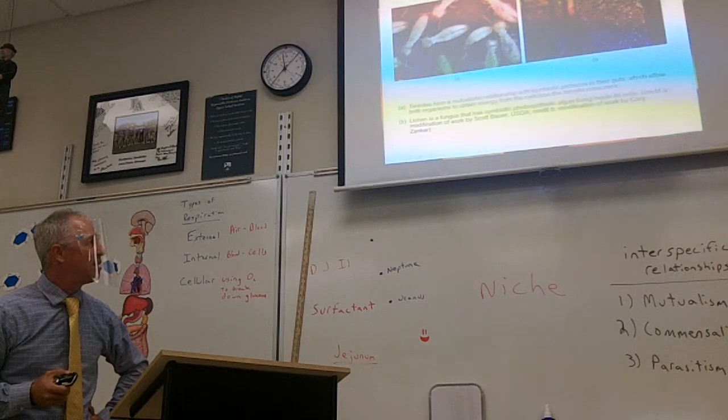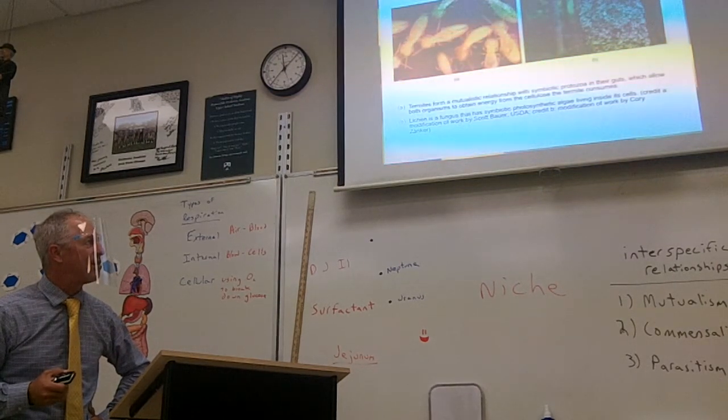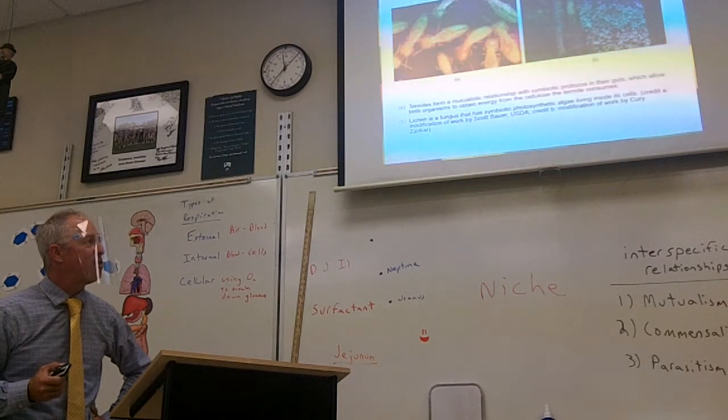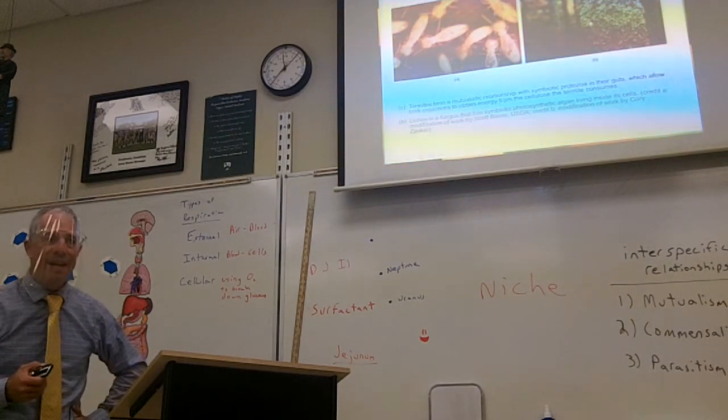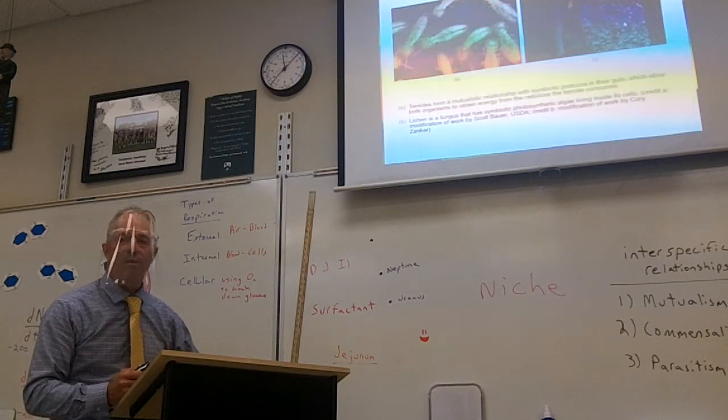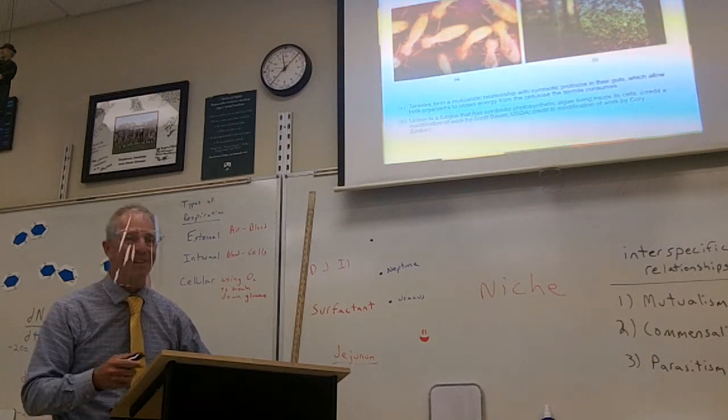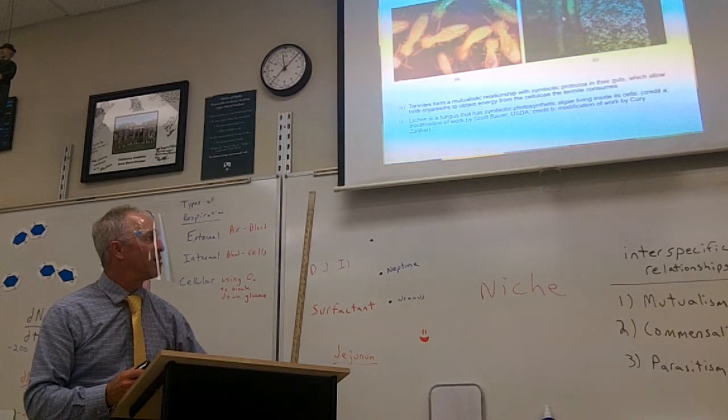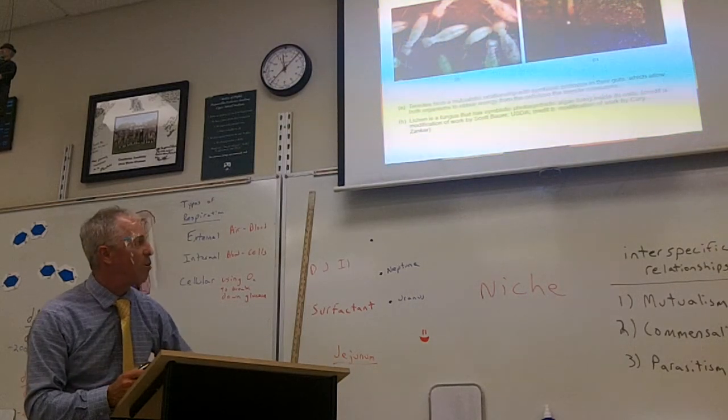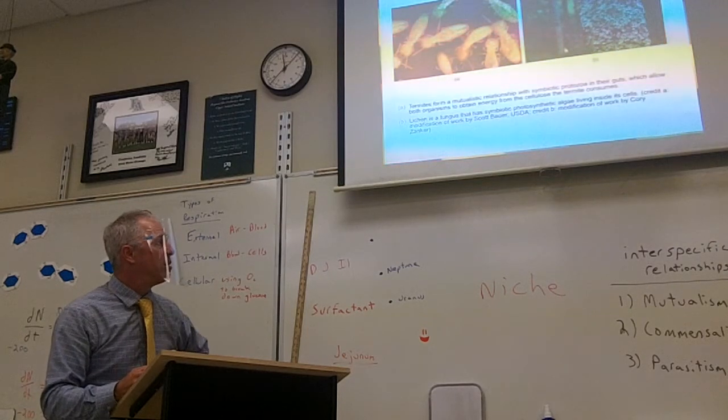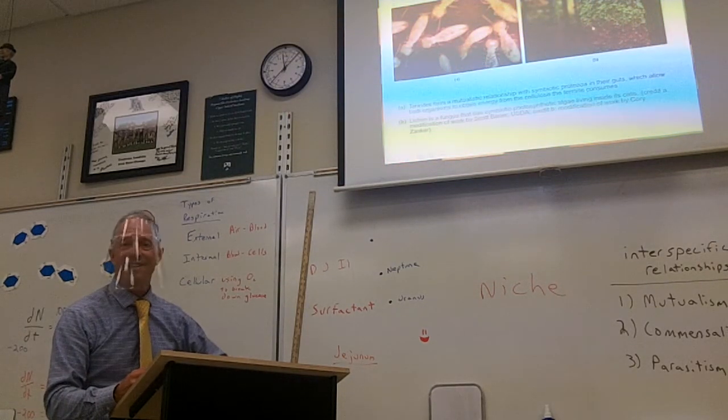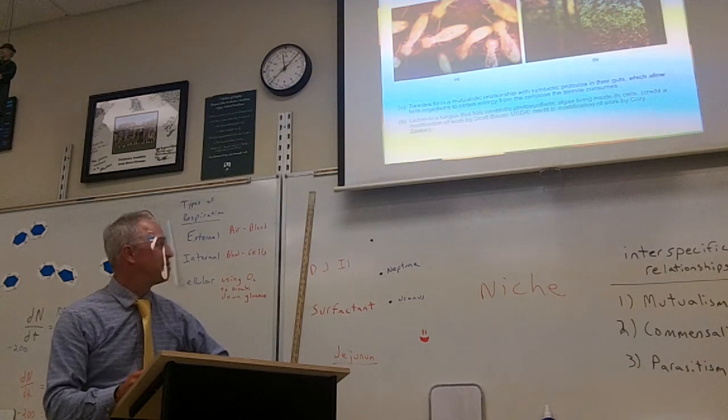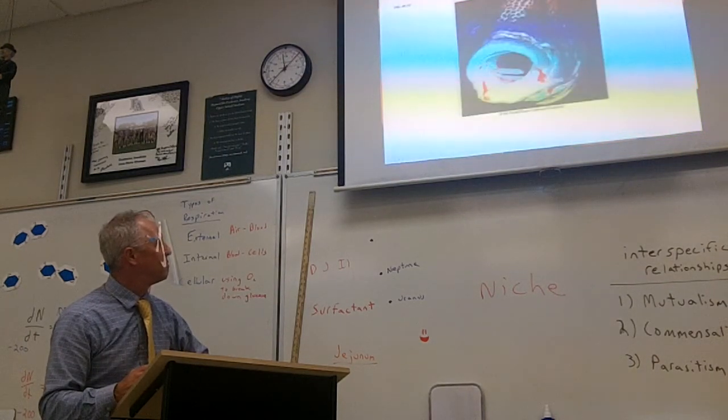This is a lichen. A lichen is a fungus and an algae living together. The fungus absorbs water from the air, and the algae makes food by photosynthesis. And it's a very successful partnership. Lichen can grow almost anywhere, except where there's heavy pollution. Pollution kills lichen because they're pulling water from the air. They pull in pollution from the air, too. You don't see lichens in the middle of big cities. You can always tell if the air is good somewhere by looking for lichens.